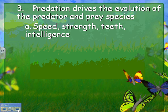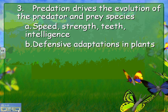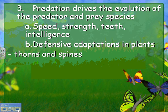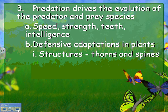Predation also drives the evolution of both predator and prey species. Speed, strength, teeth, and intelligence can all be affected by predator-prey relationships. If prey becomes faster or hides better, the selective pressure on predators is to increase speed or improve eyesight. Organisms with better eyesight that can spot hidden prey do better, and prey that can hide better also do better — so they affect each other's evolution.